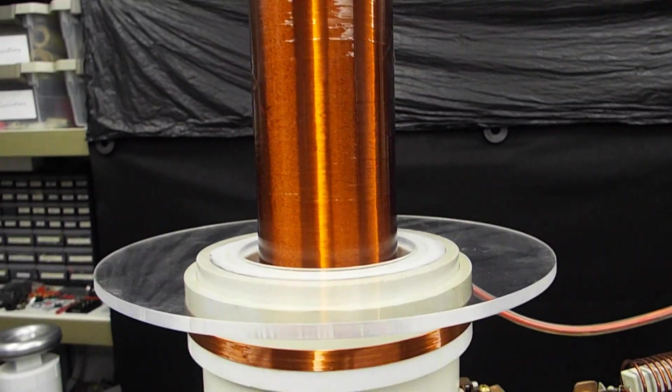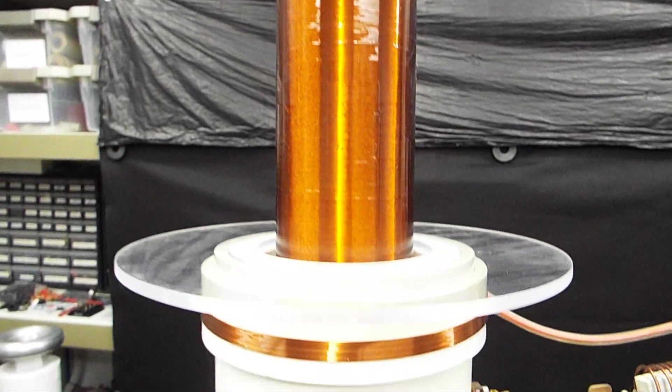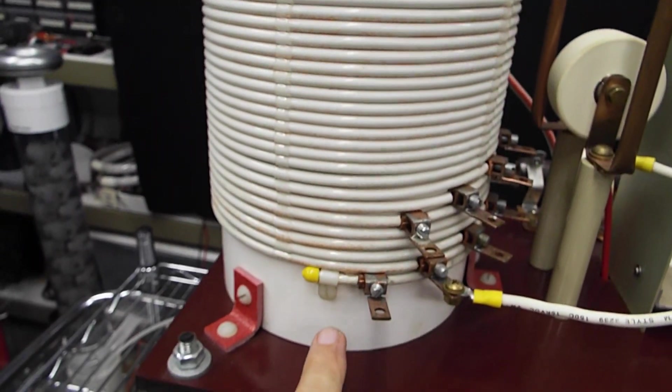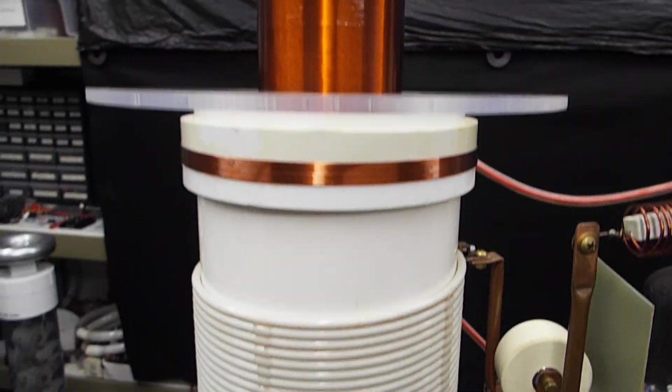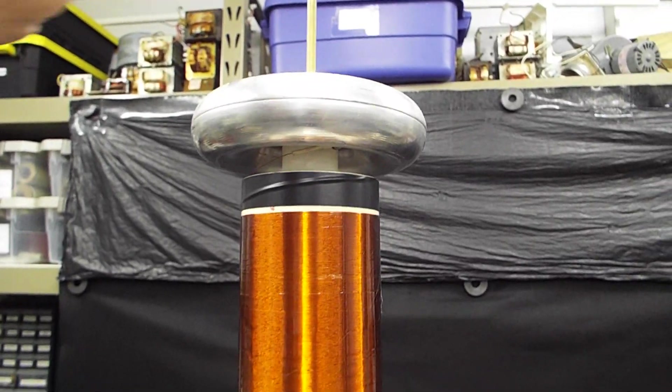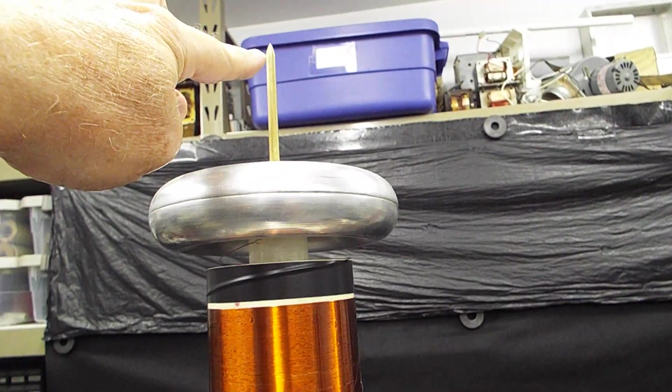And here you can see a secondary coil. Of course, the secondary coil goes all the way to the bottom. And there's an aluminum toroid on the top with a brass discharge terminal.